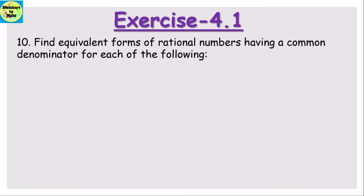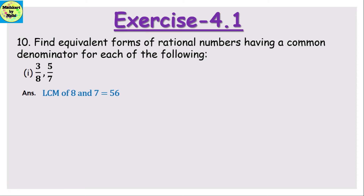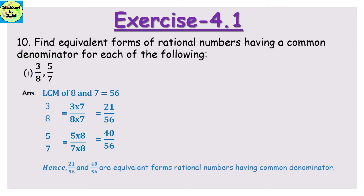Question number 10: find the equivalent form of rational numbers having a common denominator. First part: 3/8 and 5/7. We find the LCM of 8 and 7, which is 56. Converting 3/8: multiply by 7 to get 21/56. Converting 5/7: multiply by 8 to get 40/56. Hence 21/56 and 40/56 are the equivalent forms of these rational numbers with a common denominator.